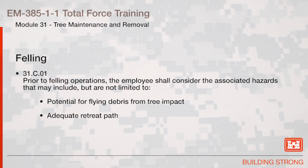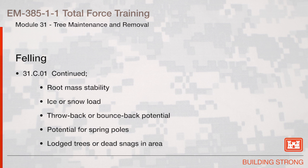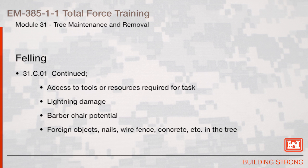Additional felling hazard considerations include: potential for flying debris from tree impact, adequate retreat path, evidence of bees or wildlife habitation in the trees, poisonous plants or water hazards, ability to control access to the worksite, authority to remove the tree, quality of wood fiber in the hinge area, root mass stability, ice or snow load, throwback or bounce-back potential, potential for spring poles, lodge trees or dead snags in the area, access to tools or resources required for the task, lightning damage, barber chair potential, or foreign objects — such as nails, wire fence, concrete, etc. — in the tree.